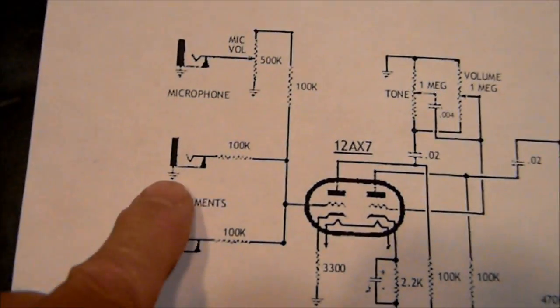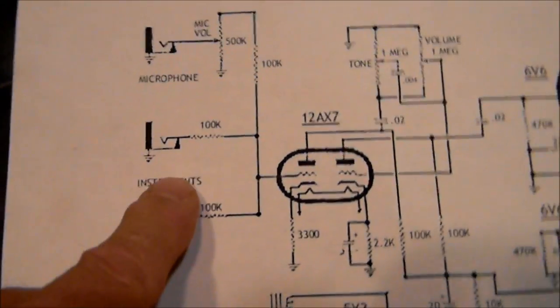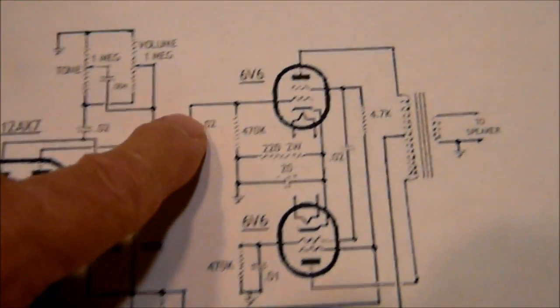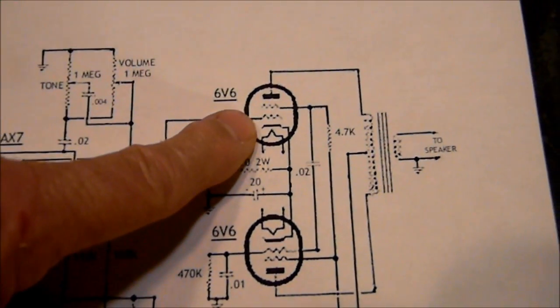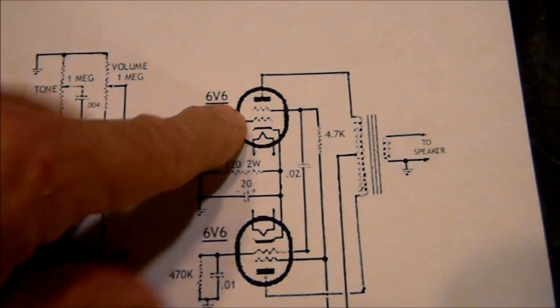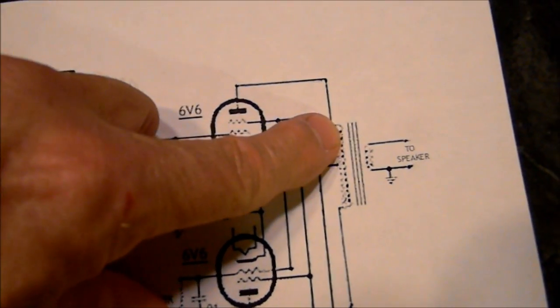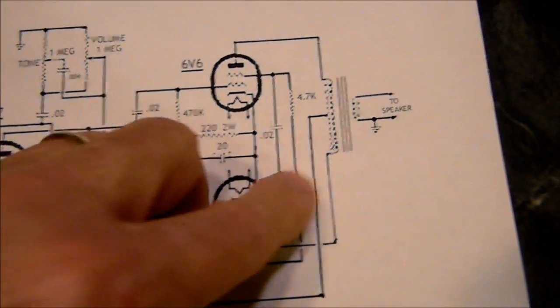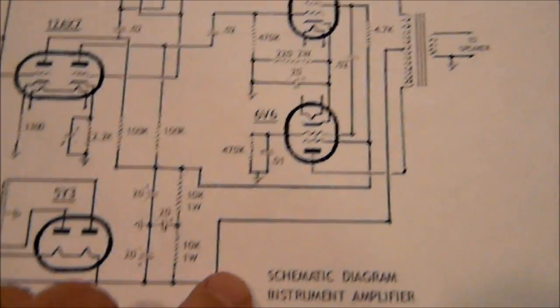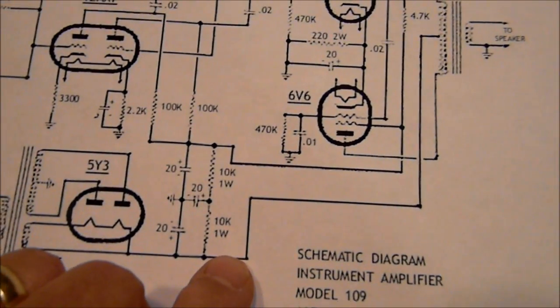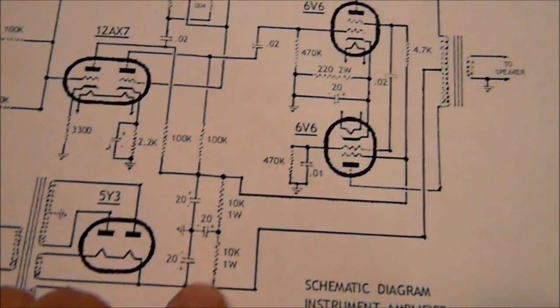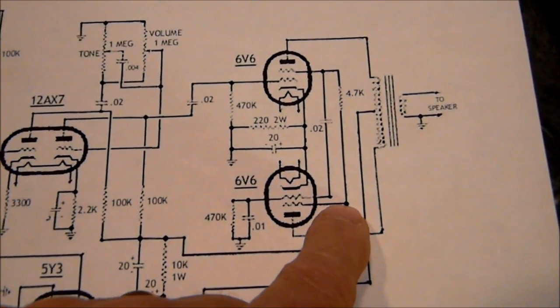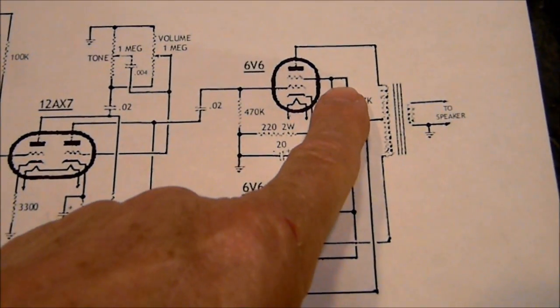It has a microphone input, two instrument inputs with volume control for each one, into a 12AX7. But we'll jump quickly over to the phase inversion of this thing. 6V6 plate to the output transformer, same down here. The power supply has got a voltage divider in here and comes up and feeds the screen and feeds this screen through a resistor.